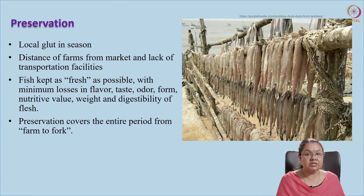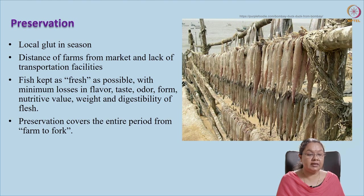If the product is harvested in large amounts, by the time it reaches the market it may undergo spoilage. So if you preserve it — lower the temperature, cook it, do curing, convert it into pickle, or use some other preservation technique — by the time it reaches the market it will not be spoiled and you can at least maintain the nutritional quality. Keeping fish fresh is very important; there should not be any losses to flavor, texture, or nutritive value. Weight and digestibility of the flesh should also be maintained. Preservation must be maintained from the point of capture — farm to fork — until it reaches the consumer.